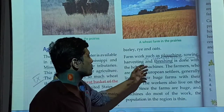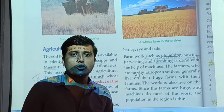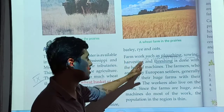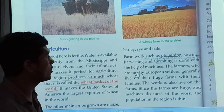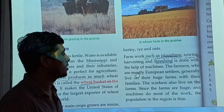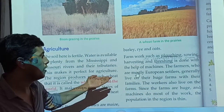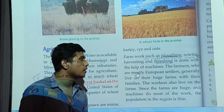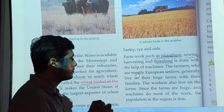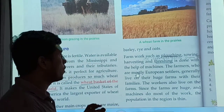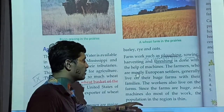Farm work such as ploughing, sowing, harvesting, and threshing is done with the help of machines. They have the technologies and well-equipped machines doing such work in the farmlands. Farmers, who are mostly European settlers, generally live on their farms with their families. The workers also live on the farms. Since the farms are huge and machines do most of the work, the population in the region is thin.